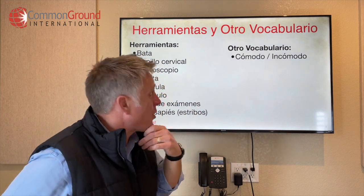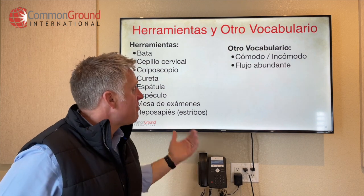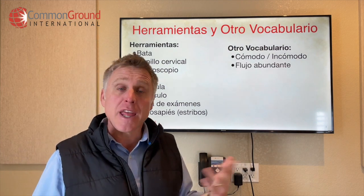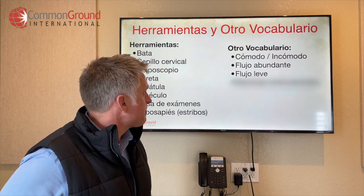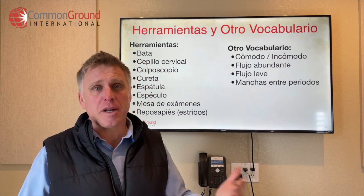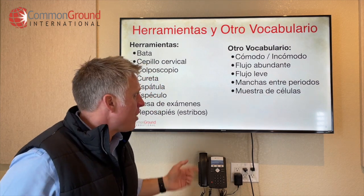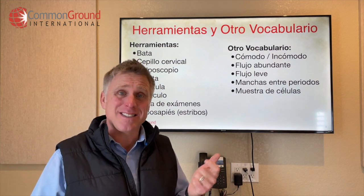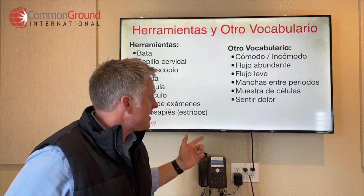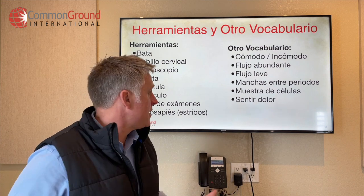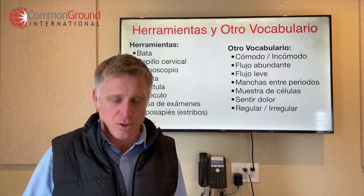Otro vocabulario that could be relevant. Cómodo or incómodo — comfortable or uncomfortable. Flujo abundante — like really heavy flow, talking about periods. Flujo leve — like a light flow. Manchas entre periodos — spotting between periods. Muestra de células — a muestra is a sample, so muestra de células would be a cell sample. Sentir dolor — feel pain. Regular and irregular.